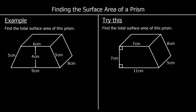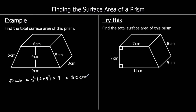Here's another surface area question. We're still adding up the area of every surface — this time we've got a trapezium on the front. The area of a trapezium is half the sum of the parallel sides, times the distance between them. So 6 plus 9 is 15, half of 15 is 7.5, and 7.5 times 4 is 30. So the front is 30cm squared.